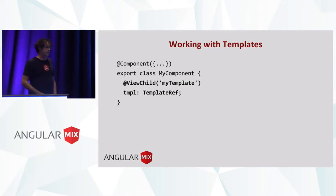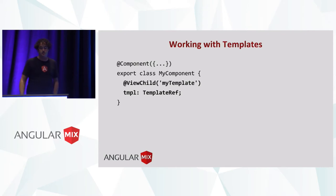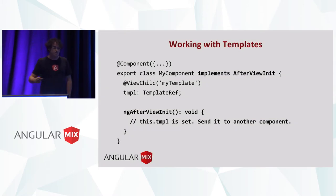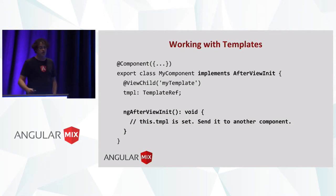If you've done ViewChild before, you probably know we can't just access this field in the constructor — it won't be set yet. We have to wait until a view exists, and we do that by using the afterViewInit lifecycle hook. Once that hook fires, the reference is ready, and we can then go and use it to transmit to LeftNav, and LeftNav can go ahead and render it.